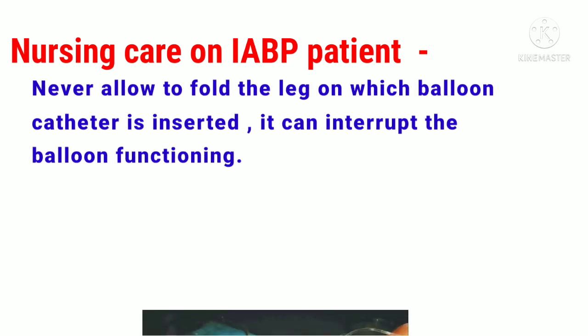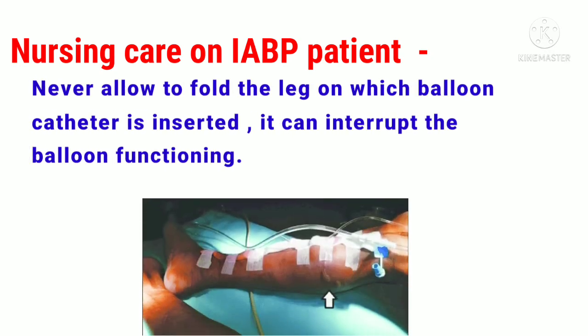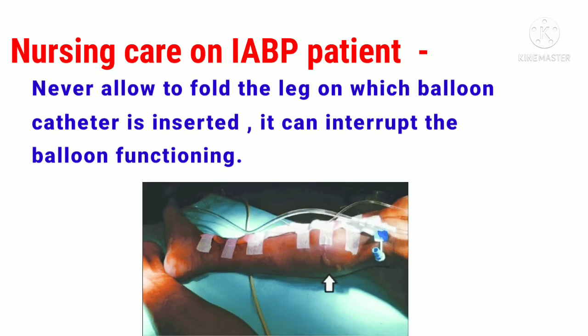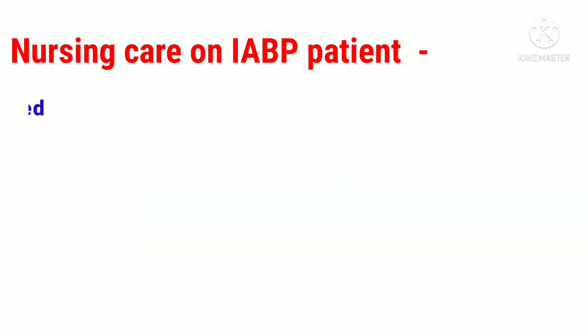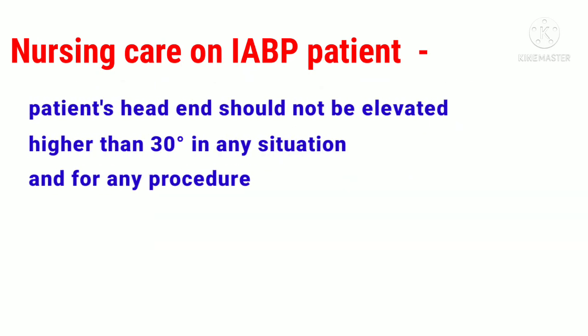Never allow the leg on which the balloon catheter is inserted to be folded, as it can interrupt balloon functioning. The patient's head end should not be elevated higher than 30 degrees in any situation or for any procedure, because this may kink or block the IABP catheter at the femoral site.